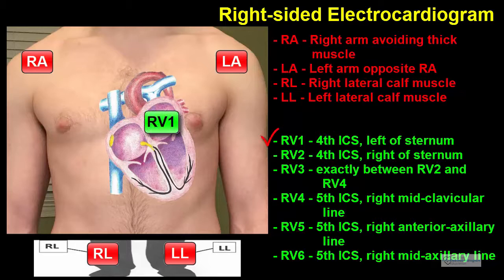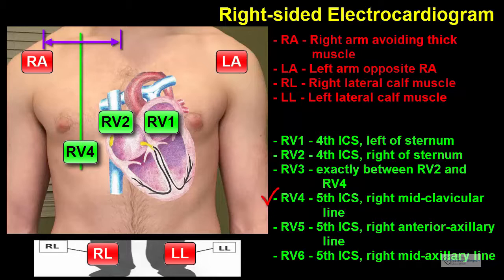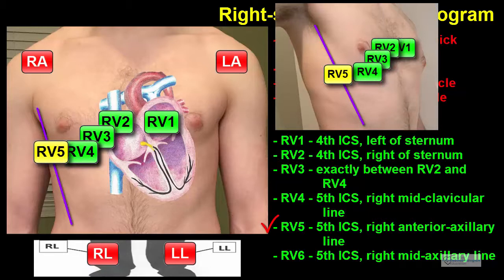Right V1 is placed in the 4th intercostal space between ribs 4 and 5, just to the left of the sternum or breastbone. Right V2 is placed in the 4th intercostal space between ribs 4 and 5, just to the right of the sternum. This is exactly opposite to the normal placement of V1 and V2. Right V4 is placed next in the 5th intercostal space between ribs 5 and 6 in the right midclavicular line. Right V3 is then placed exactly between leads right V2 and right V4. Right V5 is placed in the 5th intercostal space, even with right V4 in the right anterior axillary line. Finally, right V6 is placed in the 5th intercostal space with V4 and V5 in the right mid-axillary line.